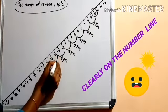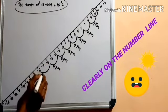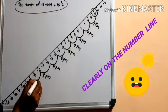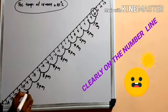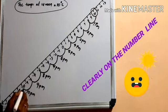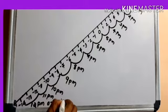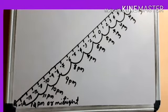At 7 PM it is negative 4 degree Celsius. At 8 PM temperature is negative 6 degree Celsius. At 9 PM it is negative 8 degree Celsius. At 10 PM it is negative 10 degree Celsius. At 11 PM it is negative 12 degree Celsius. Then at midnight it is negative 14 degree Celsius. From this we can easily find the answers to both questions.